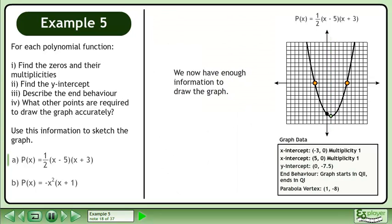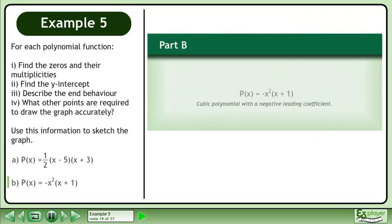We now have enough information to draw the graph. In Part B, we'll graph p of x equals negative x squared times (x plus 1), a cubic polynomial with a negative leading coefficient.